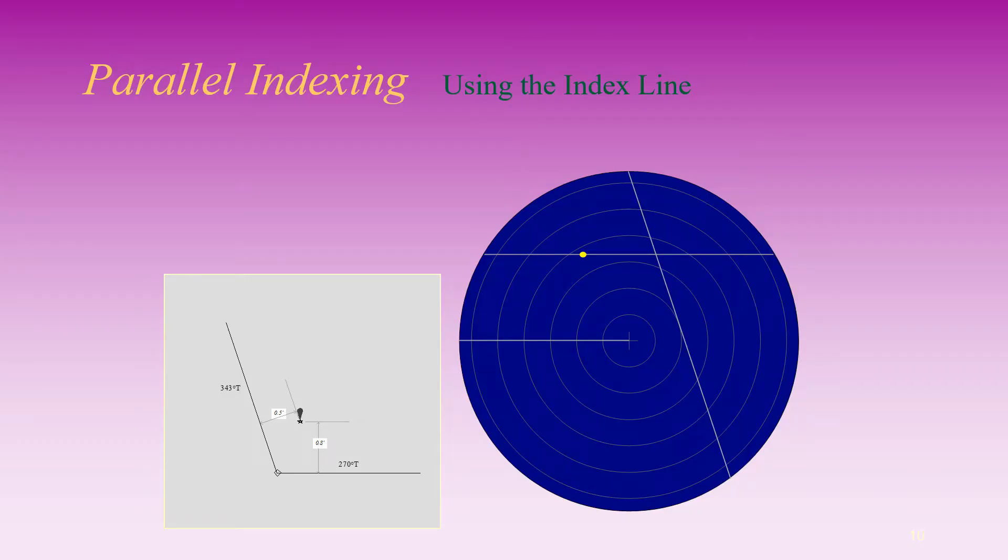In this example, own vessel is proceeding at 273 degrees true, 12 knots, and passing 0.7 nautical miles away from a landmark.